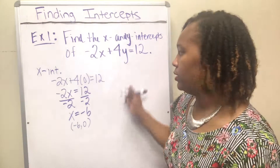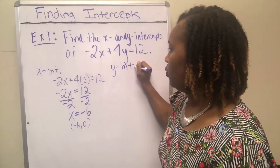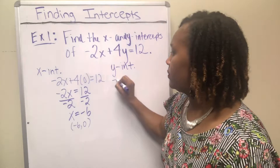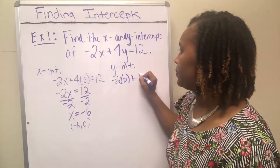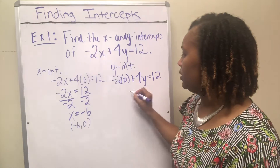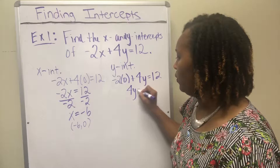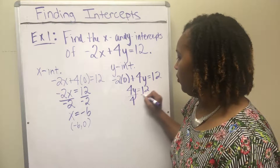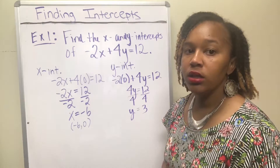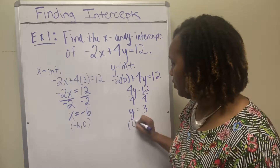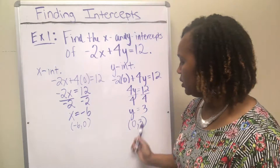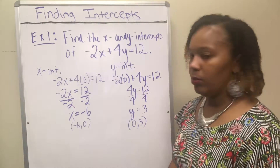Now let's find the y intercept. We find the y intercept by letting the x variable equal zero. Replacing x with zero, negative two times zero is zero, which leaves us with four y equals twelve. Dividing both sides by four gives y equals three. So this graph crosses the y axis at the point zero comma three. So the x intercept is negative six comma zero and the y intercept is zero comma three.